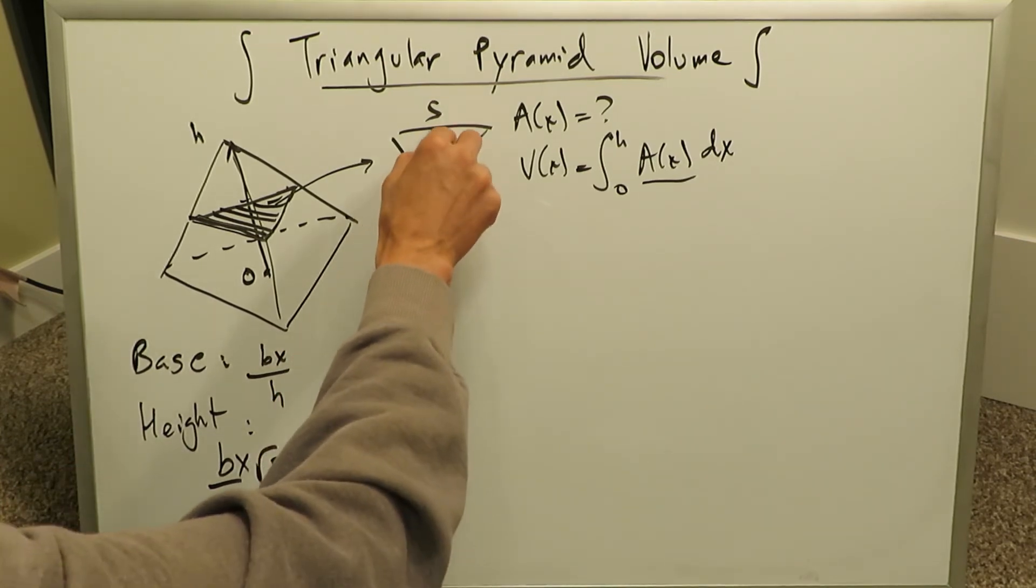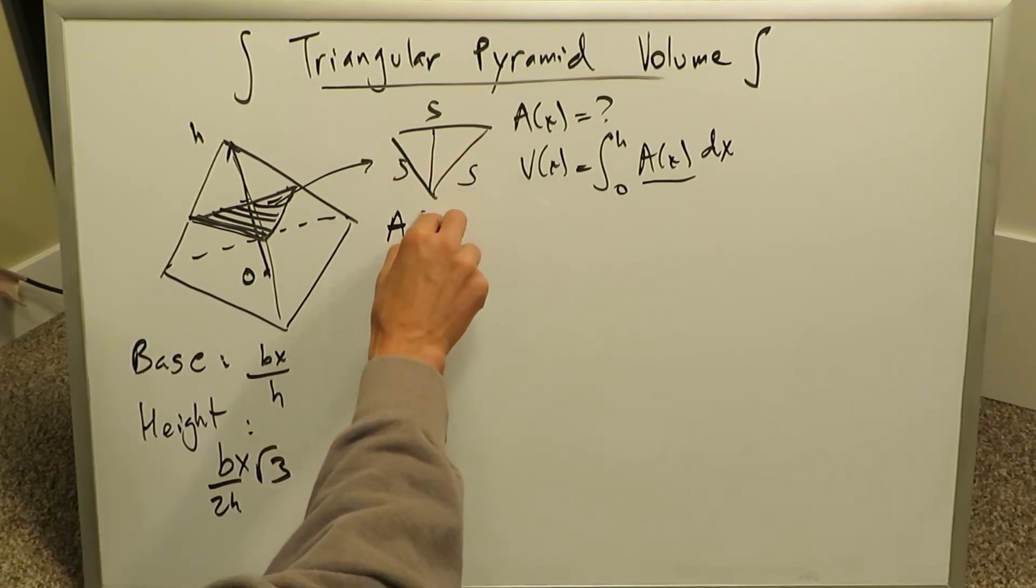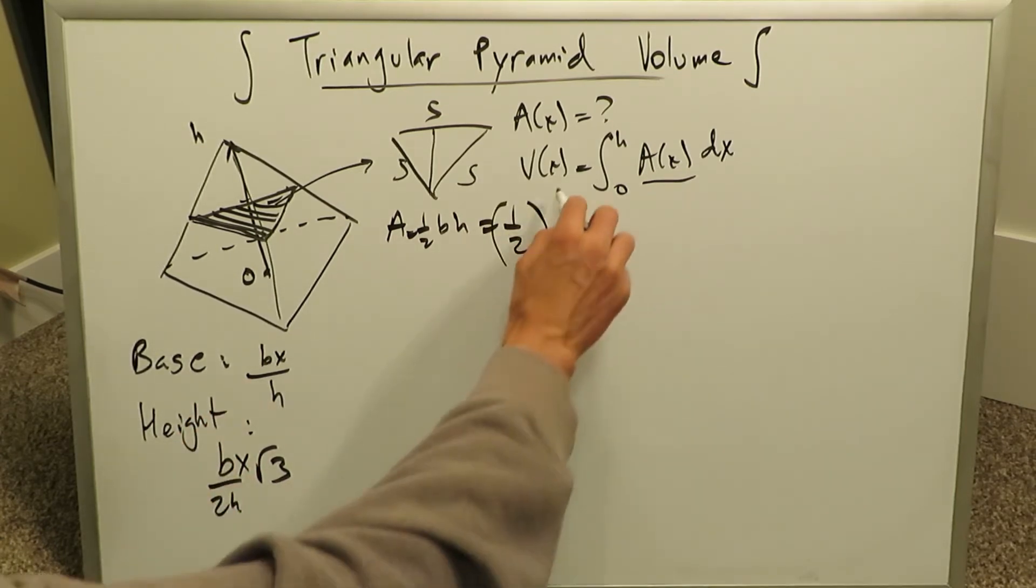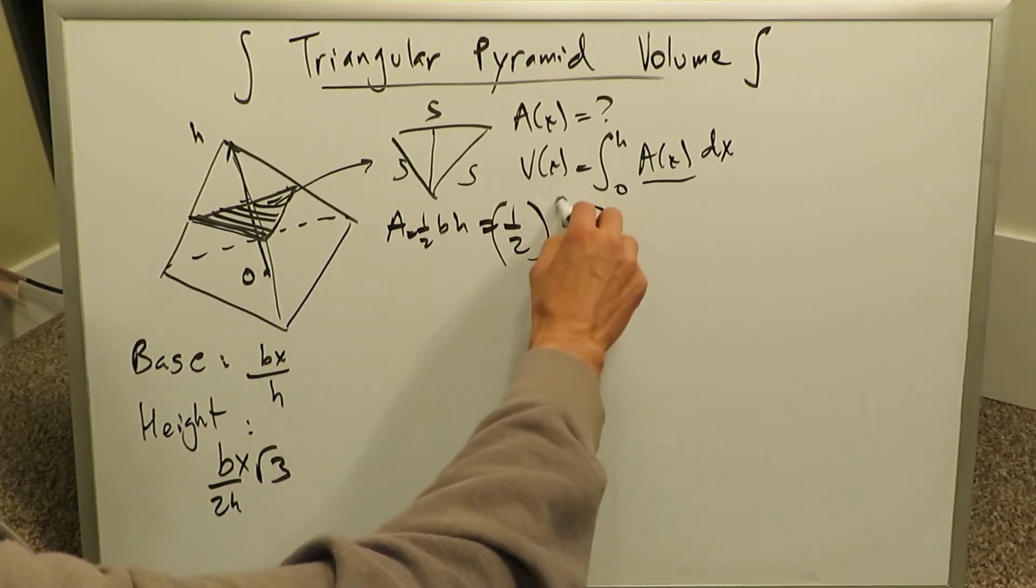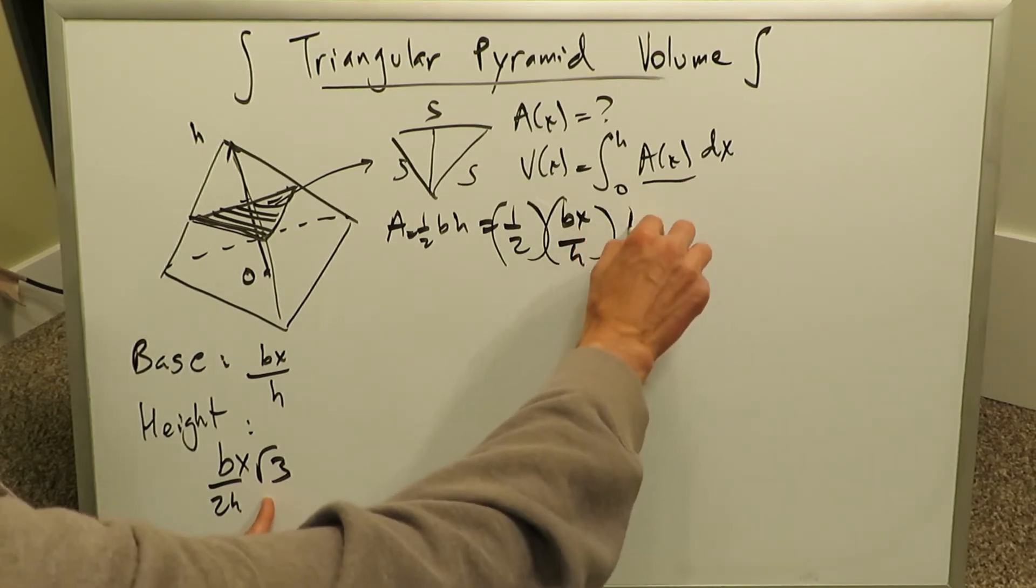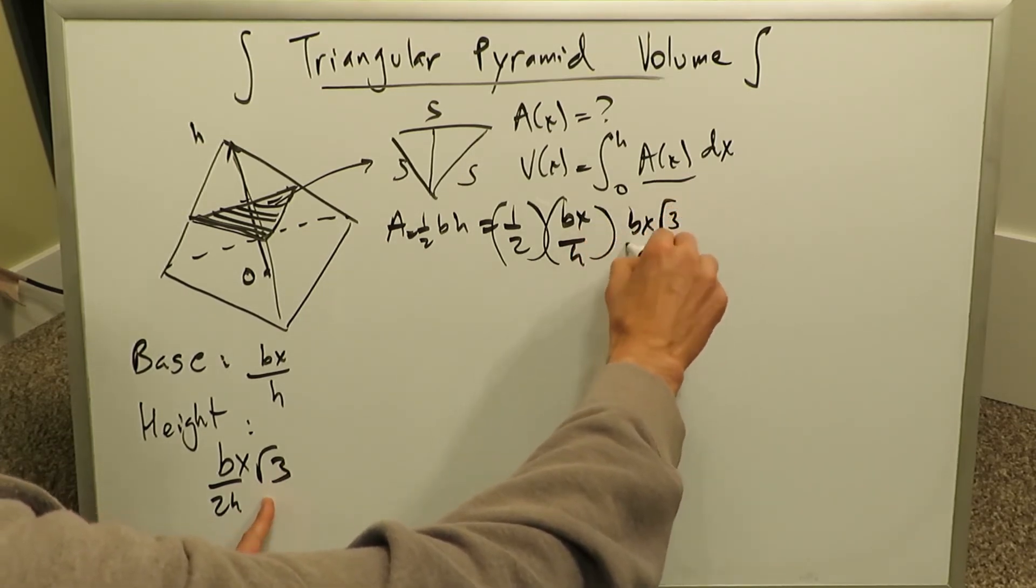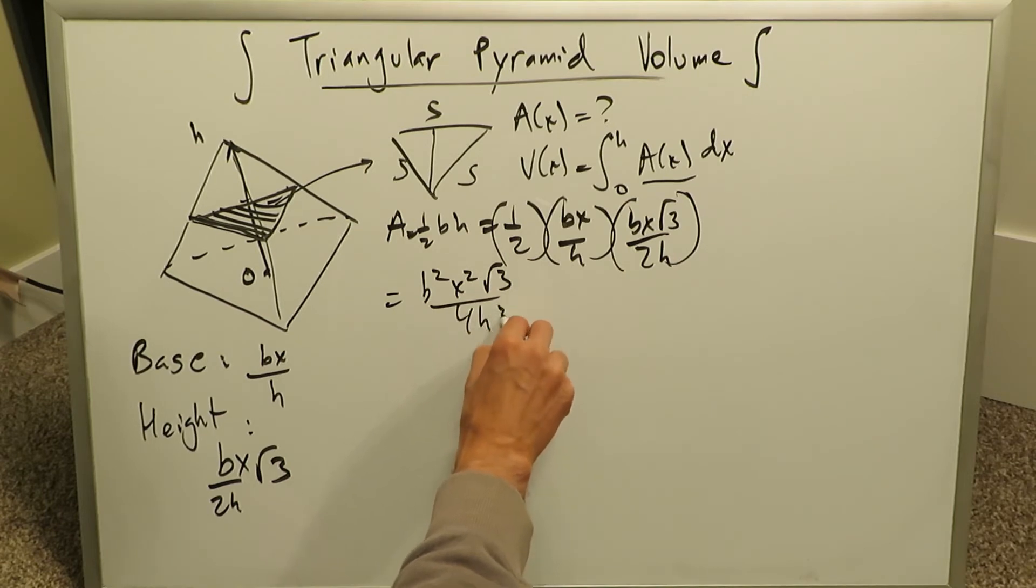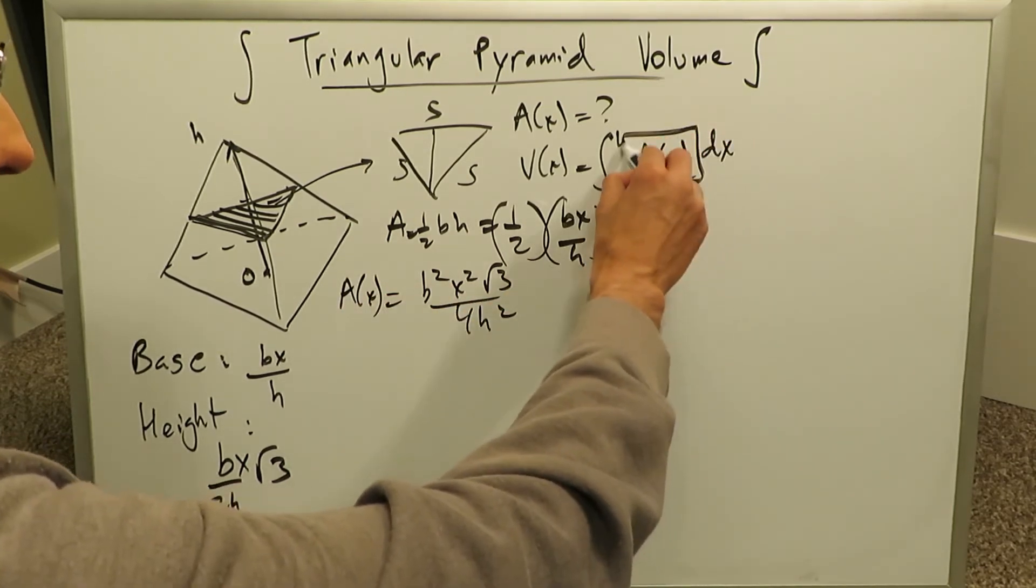This triangular slice has an area half base height, which is equal to 1 over 2 times base BX over H times height BX root 3 over 2H. Compute the product of all of this. You'll get B squared X squared root 3 over 4H square. And this is equal to area of X, this value right over here.